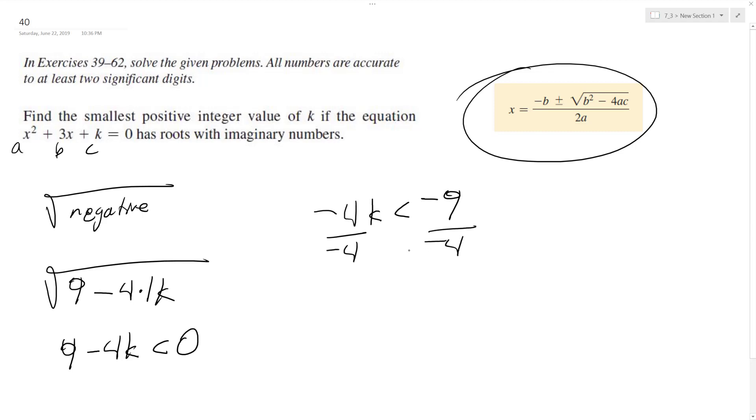And the thing you got to remember, any time you divide by a negative, you got to switch the sign, so k's got to be greater than 9 over 4. Well, we need an integer, we can't have that, so this is equal to 2.25. So k actually needs to be greater than 3 because you round up.